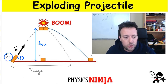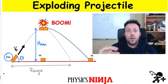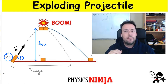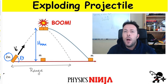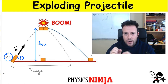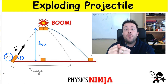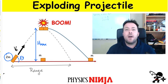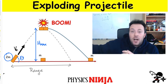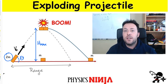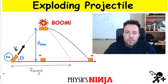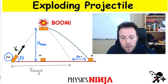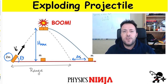We have a projectile with mass 2m being launched at some angle theta relative to the horizontal at some initial velocity v0. In the first part of the trajectory it travels like normal projectile motion, reaching a maximum height. Once it reaches that height, there's an internal explosion that produces a force and breaks the projectile into two pieces. One piece falls straight down after the explosion, and the other piece gets shot out a little bit faster. The question is: how far does that second piece go relative to the case where there is no explosion?